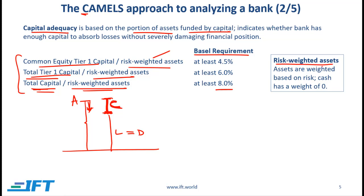Not all assets are created equal — some are more risky, others less risky. Cash, for example, has no risk, so the risk weightage for cash is zero. Corporate bonds are relatively risky, so they will have a higher risk weightage. The more risky an asset, the higher the weightage, and those specific weightages may vary from country to country. Risk-weighted assets refers to the value of a bank's assets weighted based on risk.